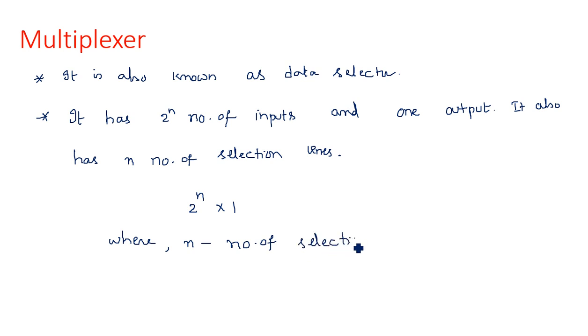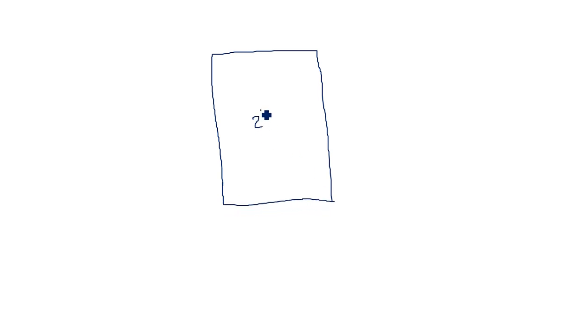A multiplexer has 2^n number of input lines, out of which only one output will be sent at a time — whichever input is selected through the selection lines goes to the output. The multiplexer is represented like a decoder or encoder, in a box shape with a 2^n by 1 size.